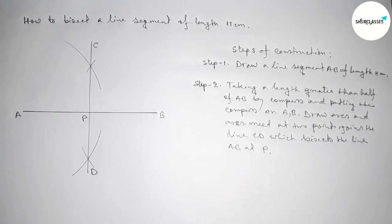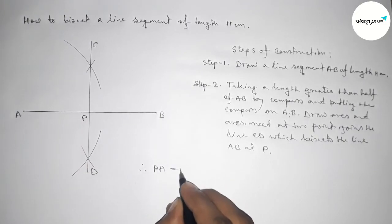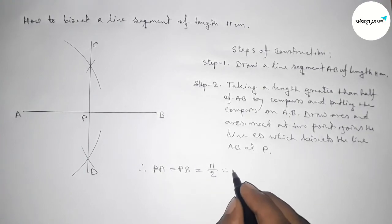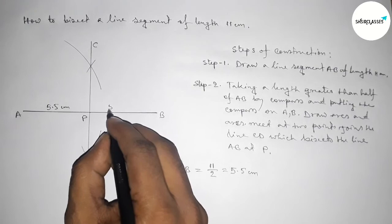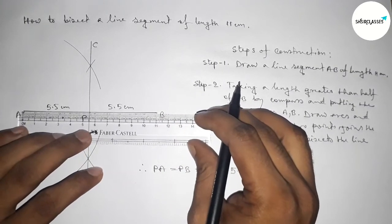So therefore PA equals PB equals 11 by 2. So this is 5.5 centimeter.